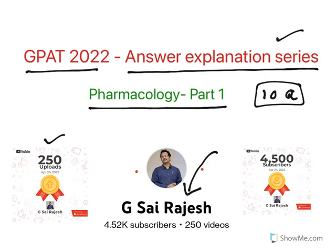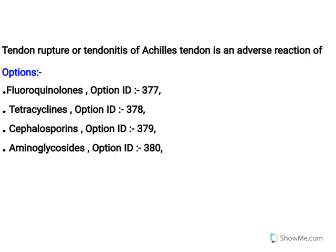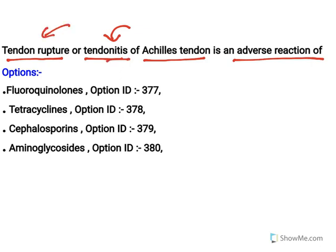Now, tendon rupture or tendonitis of the Achilles tendon is an adverse reaction — understand this word: tendonitis means inflammation of tendon, which results in tendon rupture. This is the adverse reaction of fluoroquinolones.